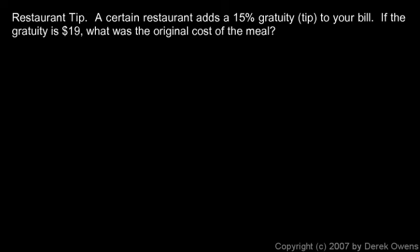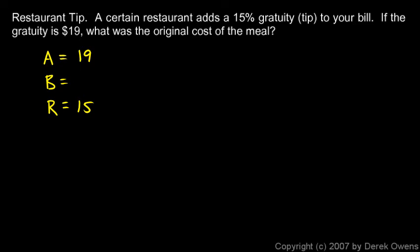I'm going to set this one up with a percent proportion, where I think about the amount, the base, and the rate. The amount in this case is $19 — that's the tip we paid. 15% is my rate, and the $19 is a certain percentage of the total, which we call the base, B. So I'll set up the proportion: A over B equals the rate over 100.